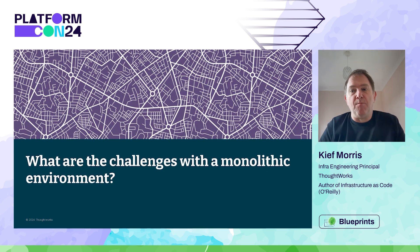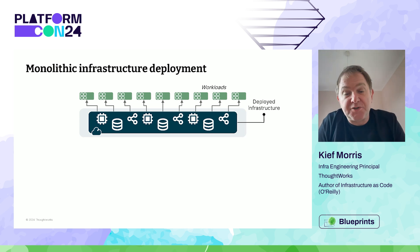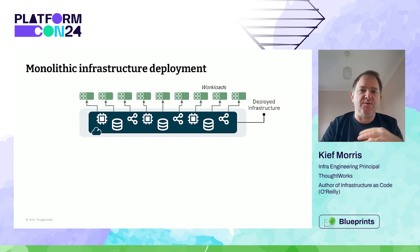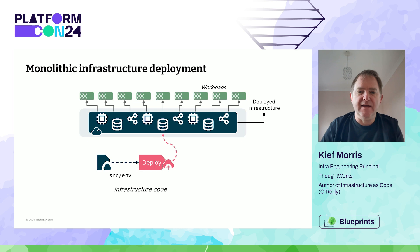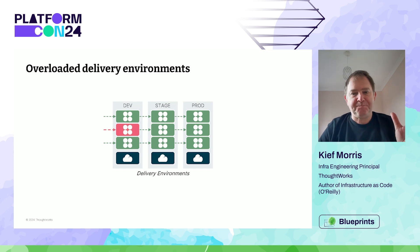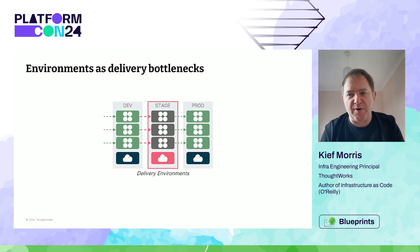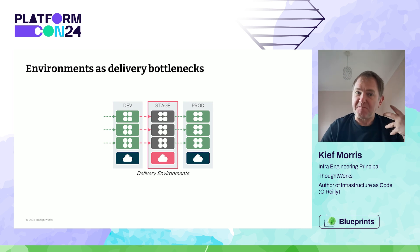What are the challenges with a monolithic environment — one big environment where multiple workloads run and multiple teams use it, treated as one infrastructure project, one deployment like a Terraform project, CloudFormation stack, or CDK stack? Everything for a particular environment is in one code base. That gives us challenges for software delivery: teams have to share environments and wait on each other, or multiple teams deploying changes break things and impact other teams. Environments become a bottleneck for delivery.